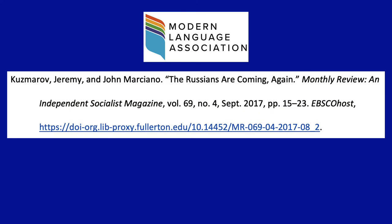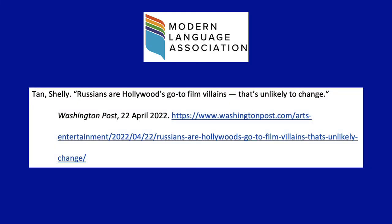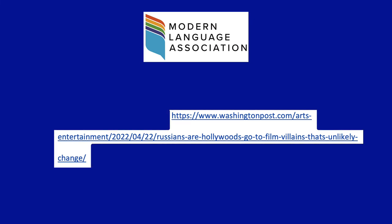The other tricky part of an MLA works cited entry is the DOI. A DOI is a unique identifier assigned to most scholarly works created after the year 2000, and it's often formatted to look like a web address. If you are citing a somewhat recent scholarly article, it will probably have a DOI. If you are citing a non-academic source online, you'll use the URL or web address of the resource instead of the DOI.